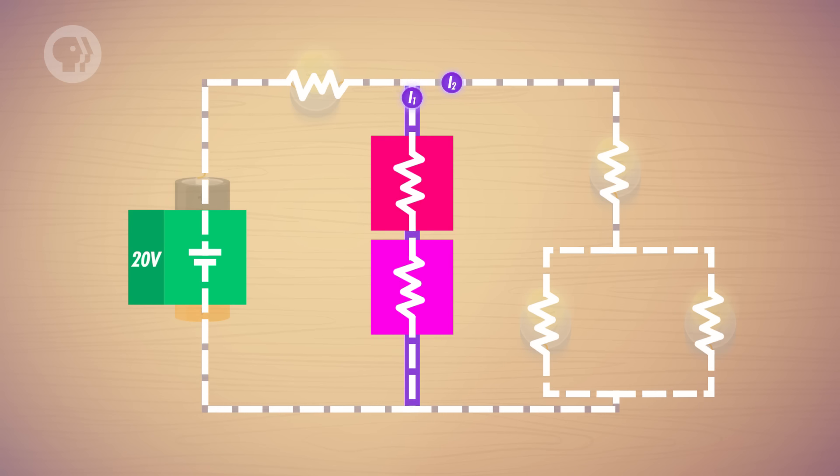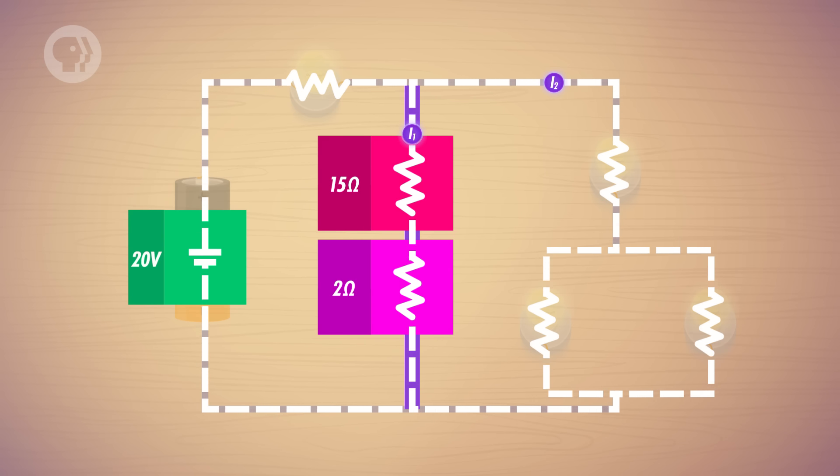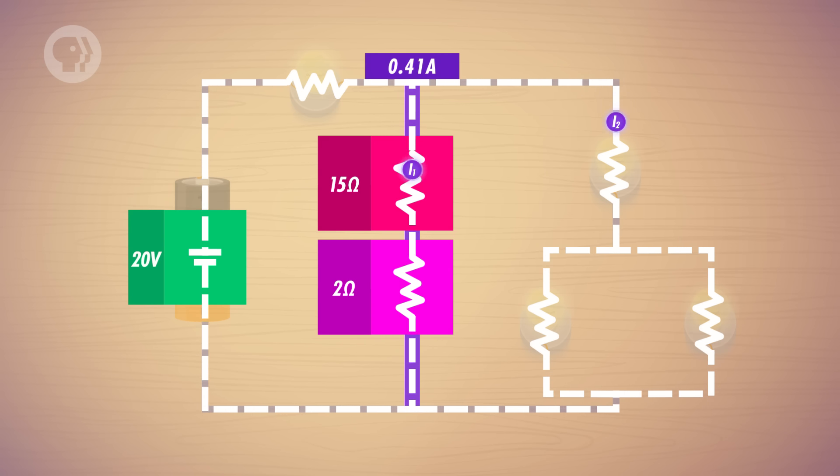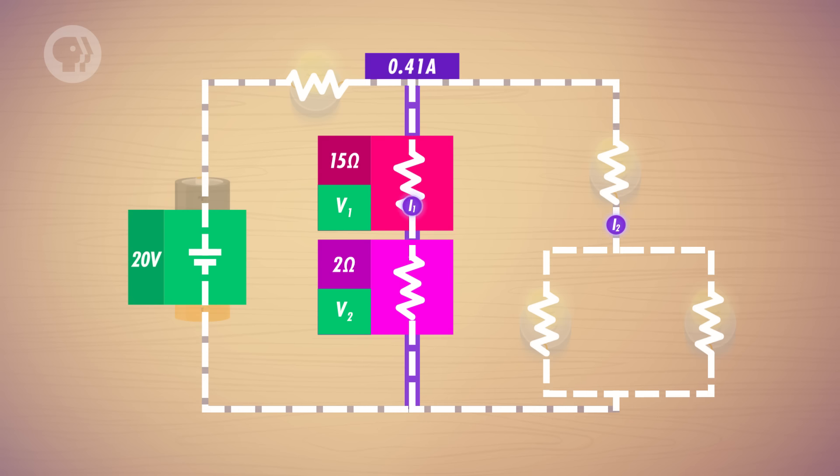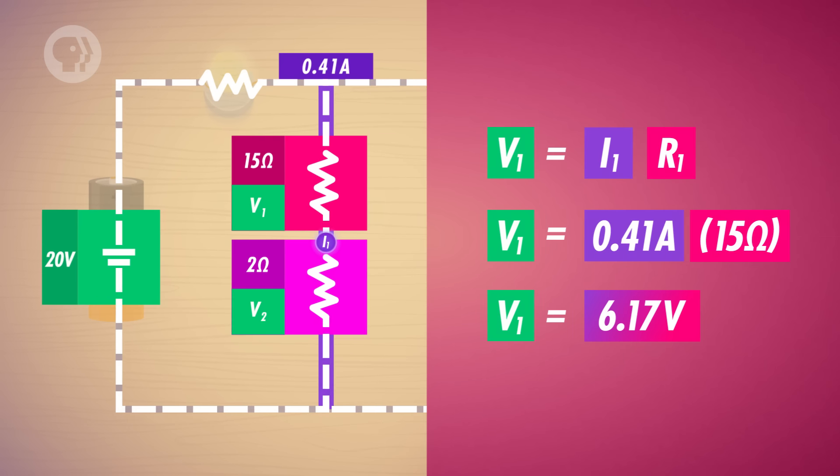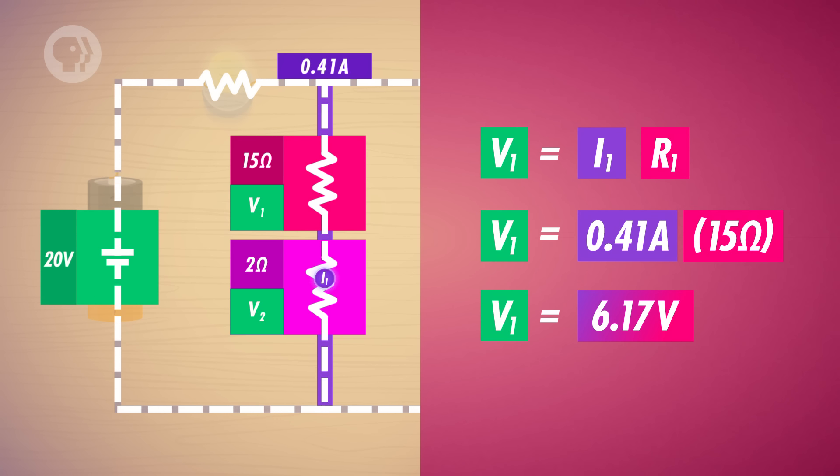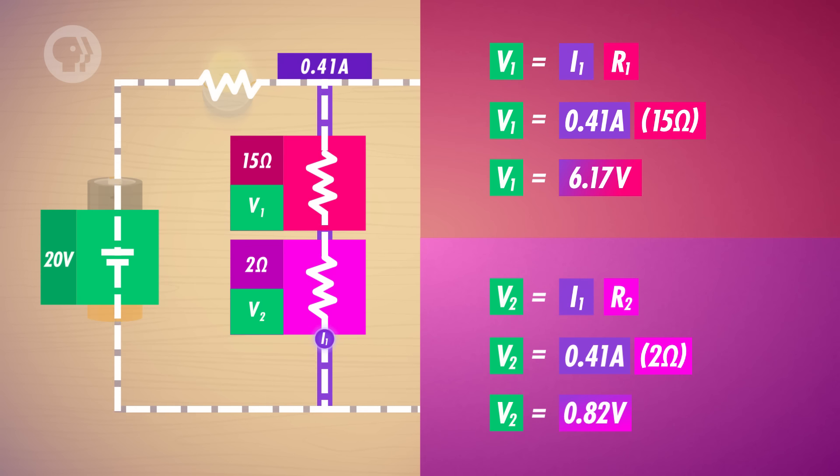One last step. The 17 ohm resistor is a series combination of a 15 ohm and 2 ohm resistor. Here, the current through them, 0.41 amperes, stays the same, while the voltage drop across each one can be found using Ohm's law. 0.41 amperes times 15 ohms equals 6.17 volts across the 15 ohm resistor. And 0.41 amperes times 2 ohms equals the remaining 0.82 volts across the 2 ohm resistor. To check your work, you can go back and see that the two voltage drops equal the total voltage drop across each branch after the 10 ohm resistor. And you've done it! Congrats! You've taken a whole circuit, simplified it down to the bare minimum, then expanded it again, discovering the current and voltage values for every single resistor.